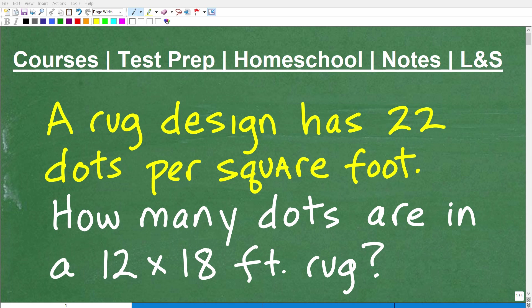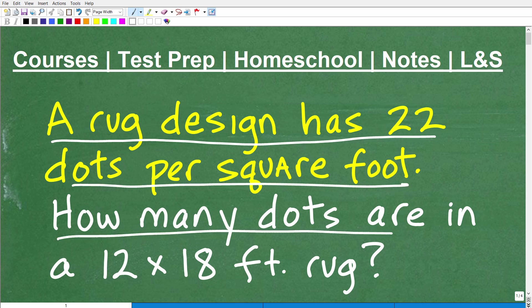Okay, let's go ahead and figure out this nice little math word problem here. Anytime you're trying to figure out anything in mathematics, the first step is always to read the problem. So let's go ahead and do that right now. It says, a rug design has 22 dots per square foot. How many dots are in a 12 by 18 foot rug?